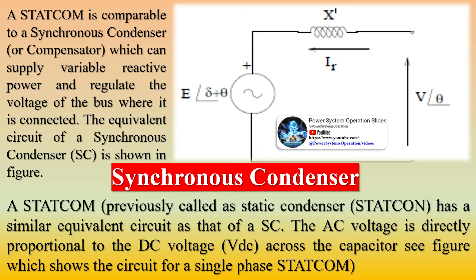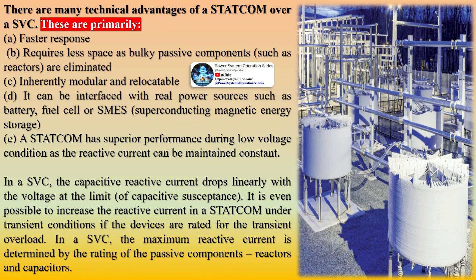STATCOM can be based on a voltage-sourced or current-sourced converter. One configuration uses a voltage-sourced converter driven by a DC voltage source capacitor, effectively an alternating voltage source behind a coupling reactance, controllable in magnitude. It can be operated over its full output current range even at very low — typically 0.2 PU — system voltage levels. It requires fewer harmonic filters and capacitors than an SVC, and no reactors, making it significantly more compact.